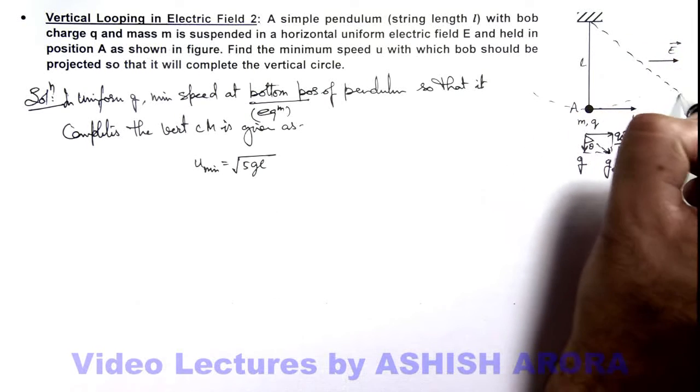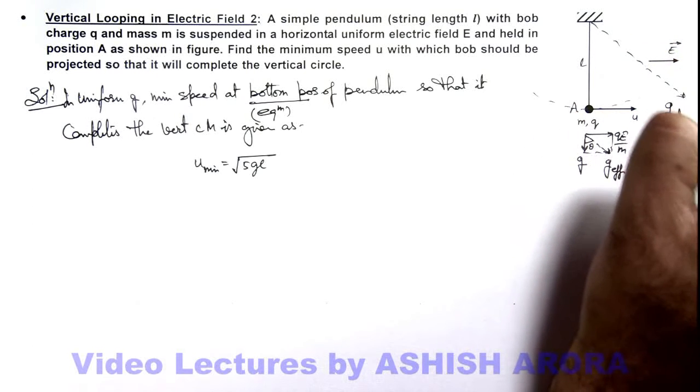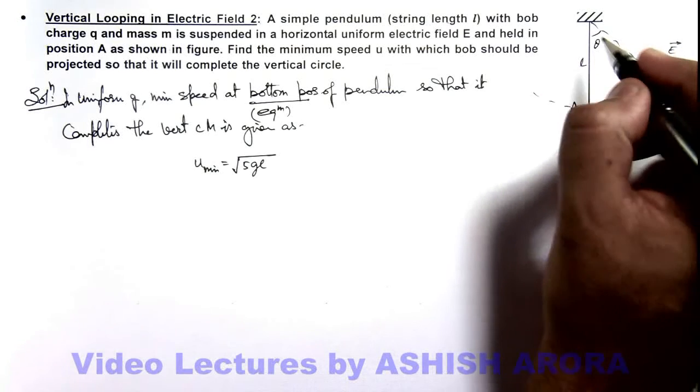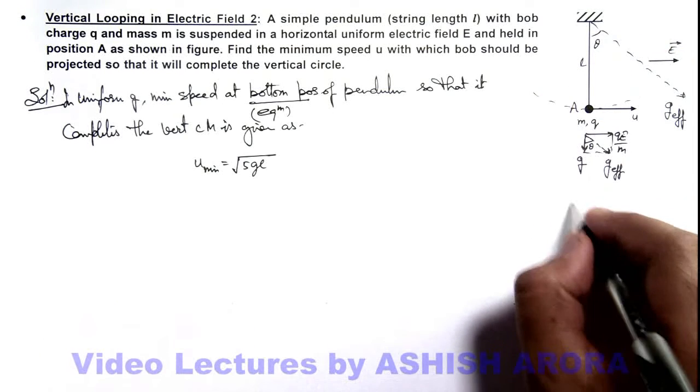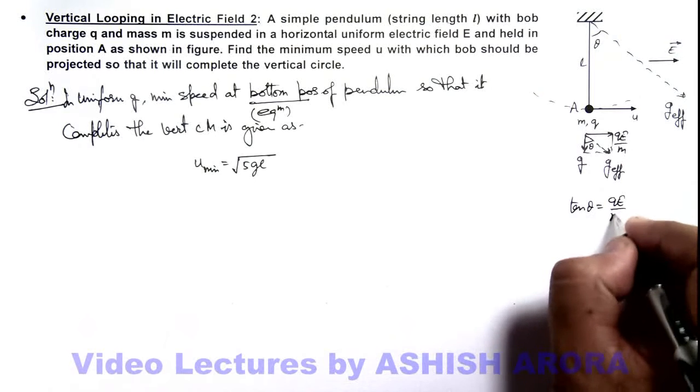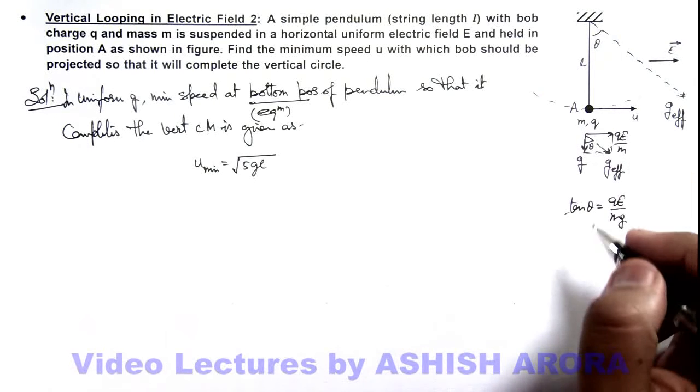And this would be the direction of g effective which is acting on this at an angle theta. And the value of theta here we can directly write, which is given as tan theta is qE over mg. So value of theta also we got.